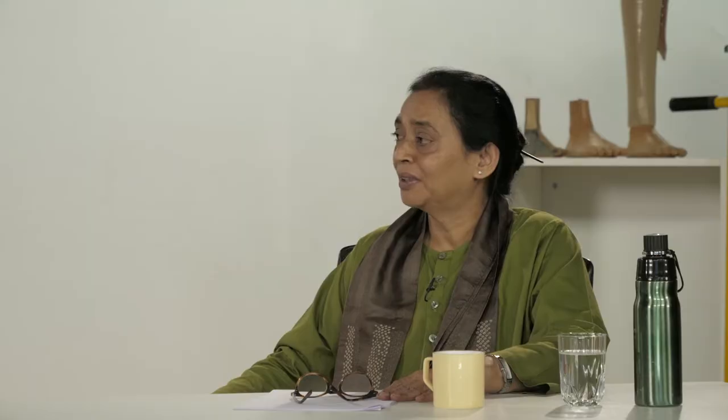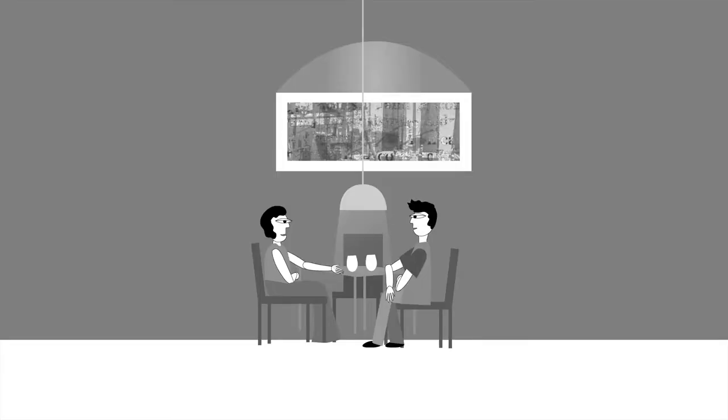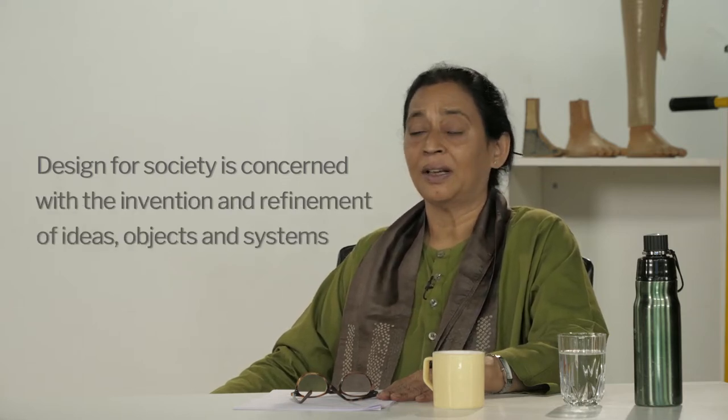Welcome Vineetha, please tell us how design and society are related. Thanks Nina. Design, as we know, strives to improve the quality of life. It is well known that designed objects and environments influence human behavior. They may even help to establish patterns of working and living that may help people with everyday concerns. Design for society concerns itself with the invention and refinement of ideas, objects and systems while being sensitive to what nature can teach us.